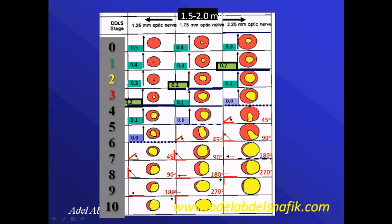So for the same finding, in the average size you classify it as stage two, but in the large size you classify it as stage one, and in the small size as stage three. It depends on disc size, but the same classification system applies throughout.